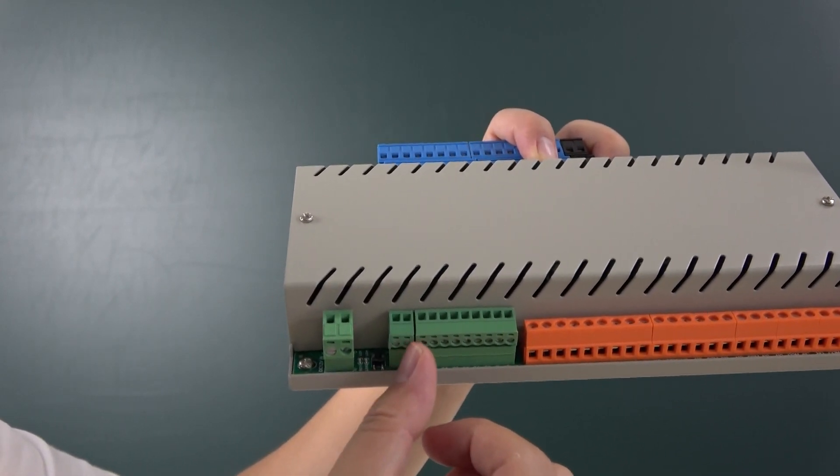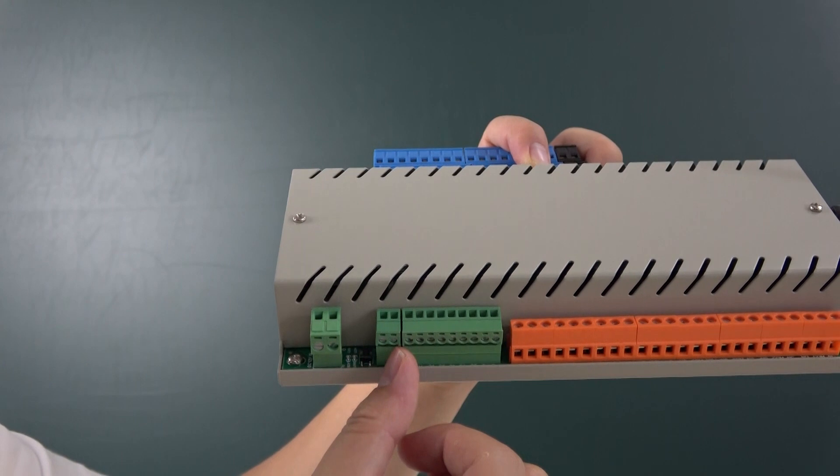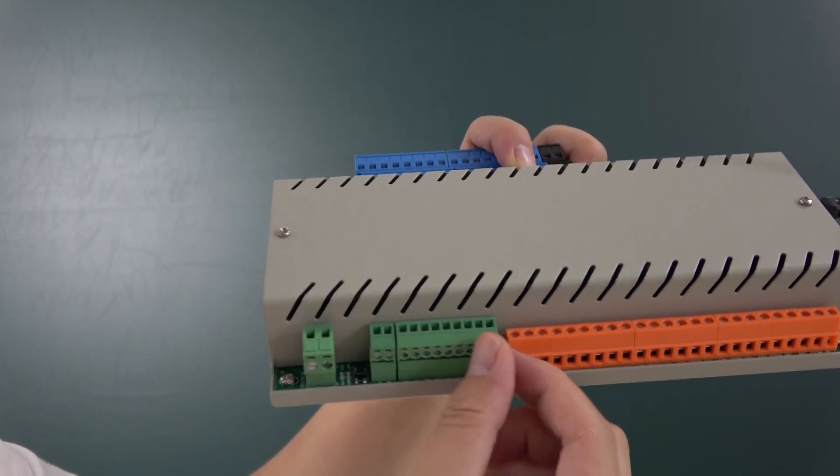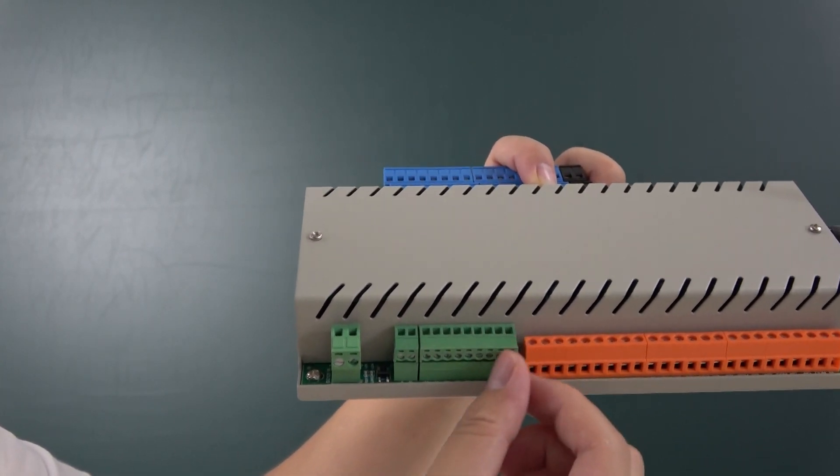And this is RS-485, A and B. And this is DS-18B-20 temperature sensor. This is also for 5 channels.